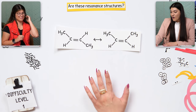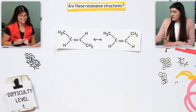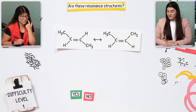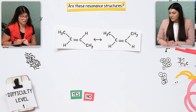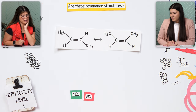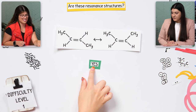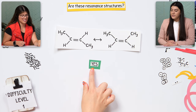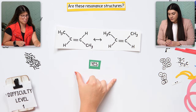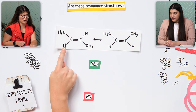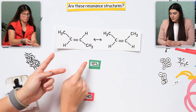So are these resonance structures? I just want you to label yes or no — what are you thinking? I'd say yes, because the charge is still the same. The only thing that moved were the electrons, and they still have the same amount of bonds. They just pretty much flip-flopped.